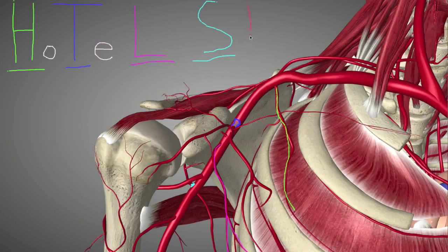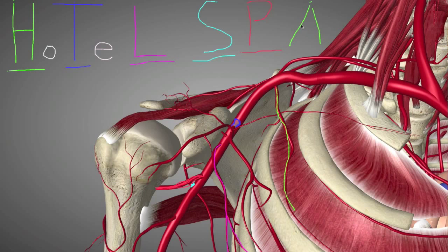In red, we have the Posterior Humeral Circumflex Artery. It's moving around the posterior side of the humeral neck and wrapping around, which is why it's called the Posterior Humeral Circumflex Artery. In this greenish color, we have the Anterior Humeral Circumflex Artery, which moves around the front of the humeral neck and anastomoses, or connects to, the Posterior Humeral Circumflex Artery. Those two arteries wrap around the humeral neck and supply that region with blood.